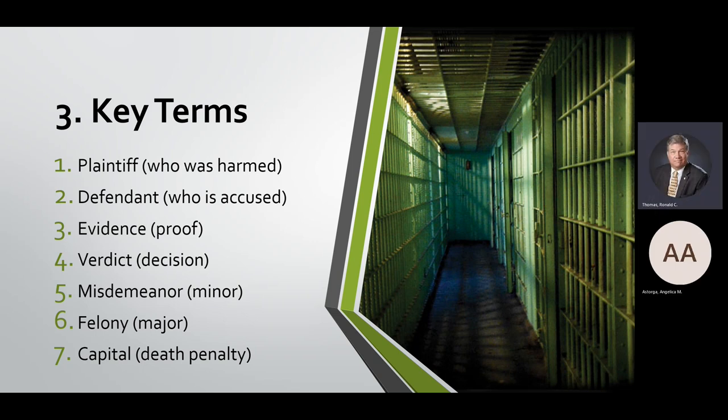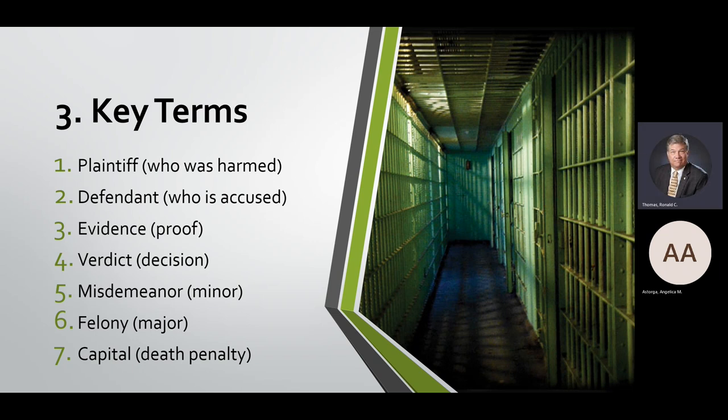Very few cases are capital cases, meaning the ultimate penalty could be death. Treason against the United States is a potential death penalty case, and some levels of terrorism are as well. That gives you three levels of severity, and we tend to classify cases by the level of punishment they would receive if the accused were found guilty.